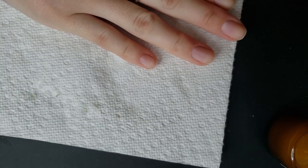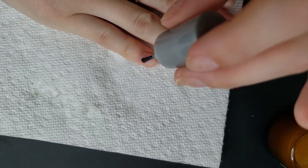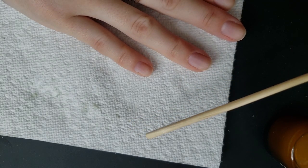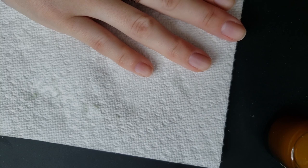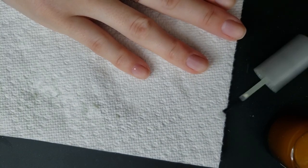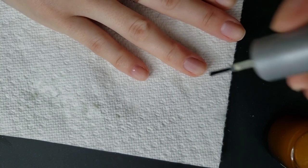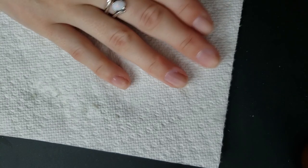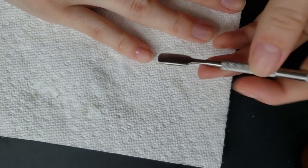So for the cuticle remover, you can use the metal stick that I'm using or you can use an orange stick. This will probably be a little bit less harsh on your nails, but this is just to get all of that dead skin off your nail plate so that the polish has a better surface to stick to.